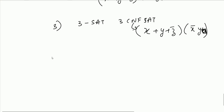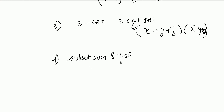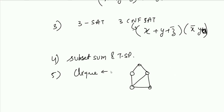Subset Sum and Travelling Salesman Problem are also NP-Complete, which we will see in the next videos. There is also the Clique Problem: given a graph, find a subset of vertices that forms a complete graph, and determine the maximum number of vertices in such a subset. For example, in a given graph, we can find a complete subgraph of 3 vertices but not 4, so the answer is 3.